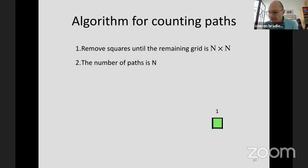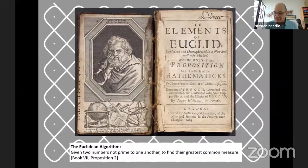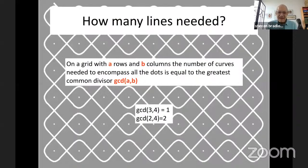Many of you will recognize this algorithm — it's exactly the Euclidean algorithm for finding the greatest common divisor of two integers, first described over 2,000 years ago in Euclid's Elements, Book 7, Proposition 2. This is an irresistible invitation to insert some number theory into a course. It also gives the answer to the question about the number of lines needed in a sona diagram: if you have a grid with A rows and B columns, then the number of curves needed is the greatest common divisor of A and B.